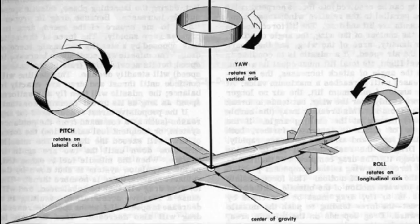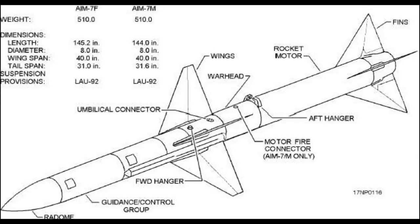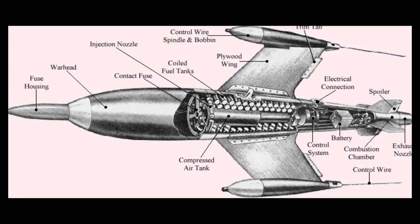The guidance subsystem uses deviations to generate corrective commands to drive the missile from a position where it is to a position where it isn't, and arriving at a position where it wasn't, it now is. Consequently, the position where it is is now the position that it wasn't, and it follows that the position that it was is now the position that it isn't.